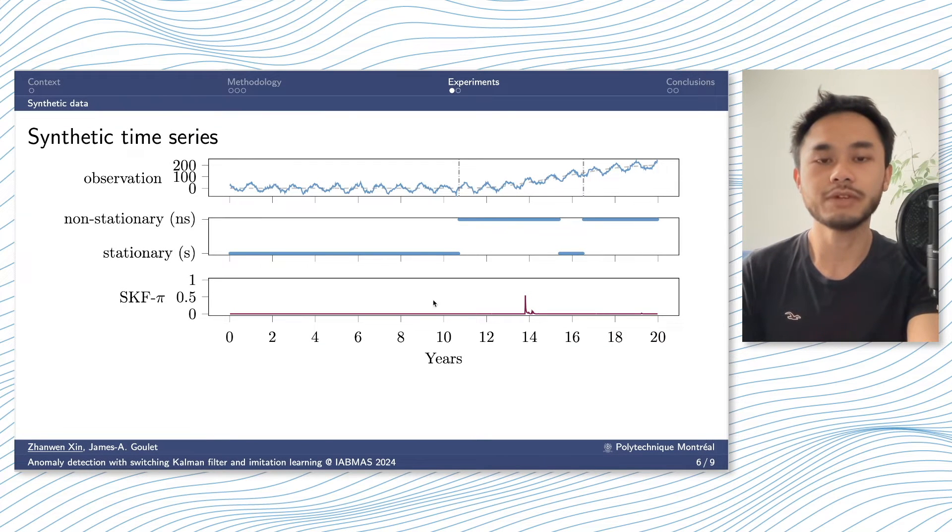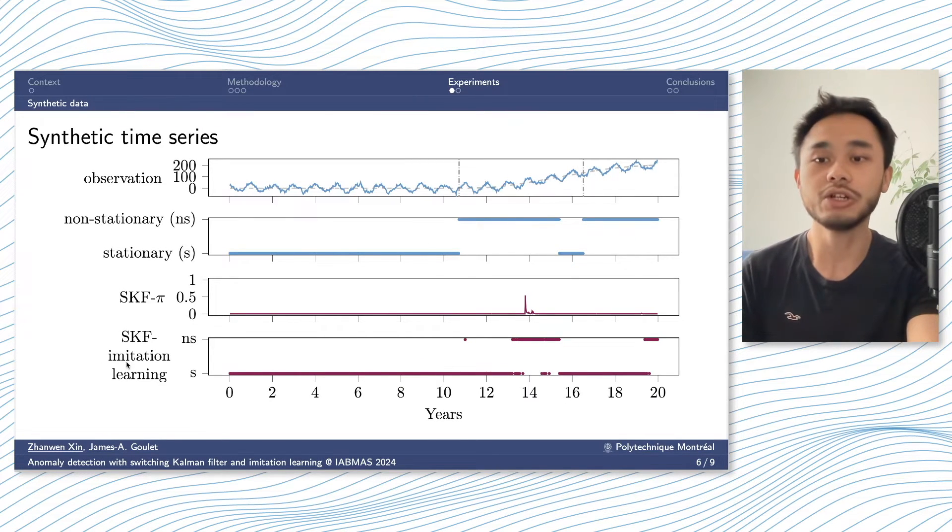Using switching Kalman filter, this is the probability of region switch. So if we have a threshold of around 0.5, the probability of region switch can capture the first anomaly. However, it will miss the second anomaly. By using imitation learning with switching Kalman filter, we can detect the first anomaly much earlier than the probability of region switch. And it consistently triggers more alarms after 13 years. And for the second anomaly, it can also capture this, while we almost see no changes in the probability of region switch.